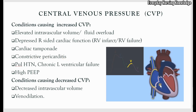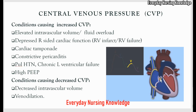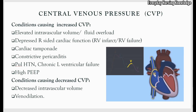Constrictive pericarditis causes the pericardium to become tough, affecting the pumping ability of the heart and increasing central venous pressure. In pulmonary hypertension, increased pressure in the pulmonary circulation causes backup pressure and elevated CVP — the same applies in chronic left ventricular failure. In mechanically ventilated patients, high PEEP can cause increased intrathoracic pressure and elevated CVP.